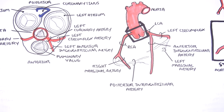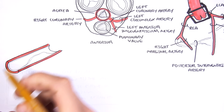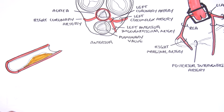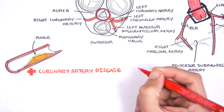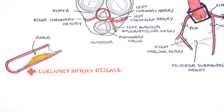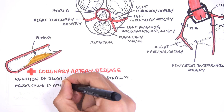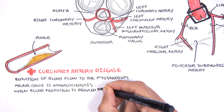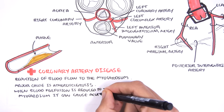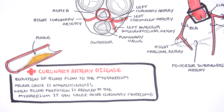Now for some clinical anatomy. Your coronary arteries, like all arteries in your body, can form blocks within them. These are fatty deposits, and when they get large enough in the coronary arteries they can cause what's called coronary artery disease or ischemic heart disease. This is where there is a reduction of blood flow to the myocardium, and the major cause is atherosclerosis. When blood perfusion is reduced to the myocardium it can cause simple angina, or something more serious called acute coronary syndrome.